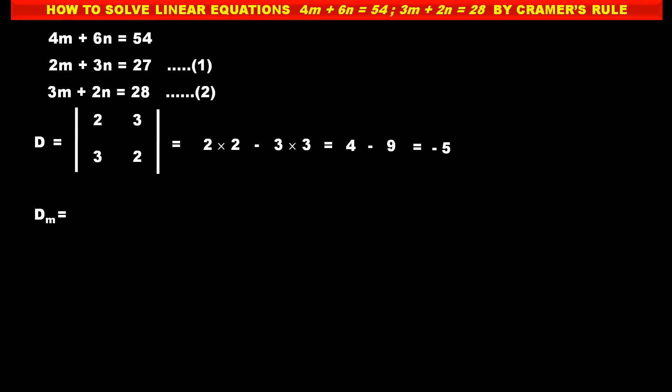Now we have to find determinant D_m, the determinant related to variable m. This determinant is the same structure as D, except we replace the first column — the coefficients of m — with the constant terms. So in the first column, we write the constant terms 27 and 28, and in the second column, the coefficients of variable n, which are 3 and 2.